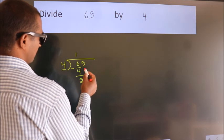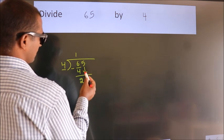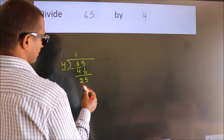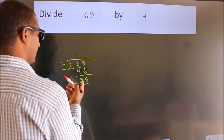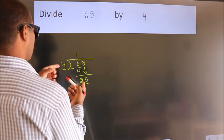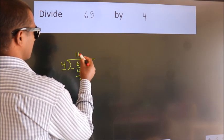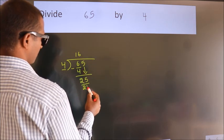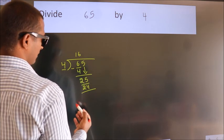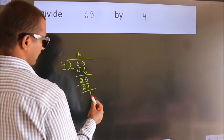After this, bring down the beside number. So 5 down. So 25. A number close to 25 in 4 table is 4 sixes 24. Now we subtract. We get 1.